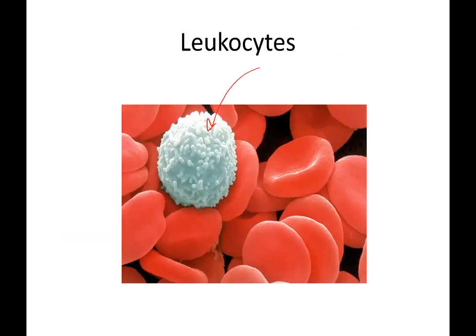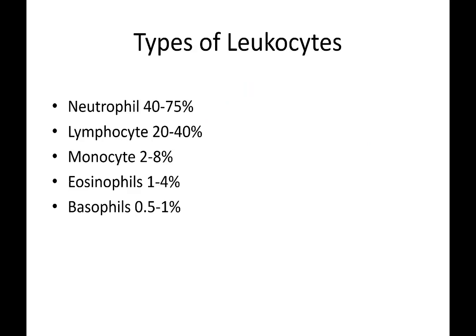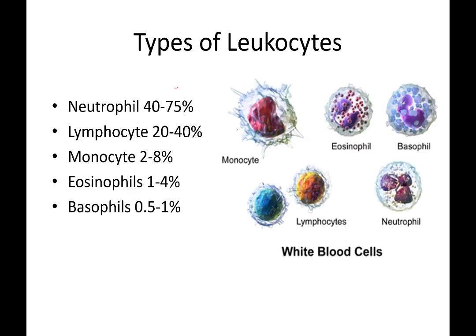White blood cells are known as leukocytes. They are indeed white; however, when we look at them on histology slides, they will be a dark purple because of the stain used to prepare the slides. There are five types of leukocytes. We can see the schematic representative drawings of each one of them here, and on the left we can see the percentage distribution of each of these different cell types.